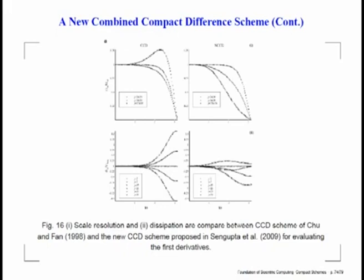These are what we like to do: this is the real part of k_eq by k and this is the imaginary part k_eq by k. You see the only culprit is once again at j equal to 2. What you actually do is evaluate this derivative, and at j equal to 2 you discard the value obtained and instead take a non-dissipative explicit scheme.